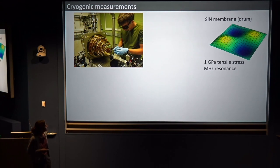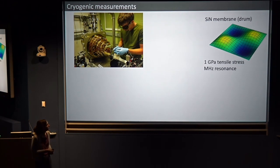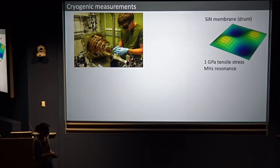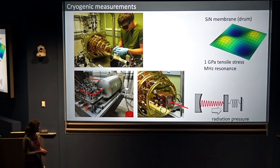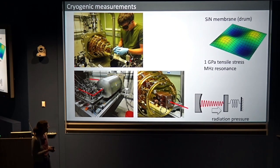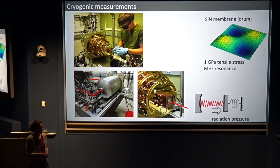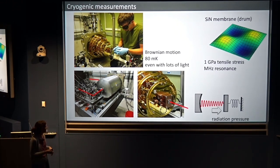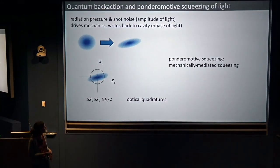We work with micro-mechanical objects where it's easier to get into this regime and actually drive these objects with shot noise. We work with a dilution refrigerator where we can cool these objects down but also probe them with light. They're silicon membrane drums — really a drum because there's a gigapascal of tensile stress, and they have megahertz resonance frequencies. This is what the experiment looks like: a bunch of optics, similar to an atomic laser cooling and trapping experiment, and we put our object inside a little canister and push on it with radiation pressure. We can measure its Brownian motion and see it equilibrated to 80 millikelvin even with a lot of light on it.